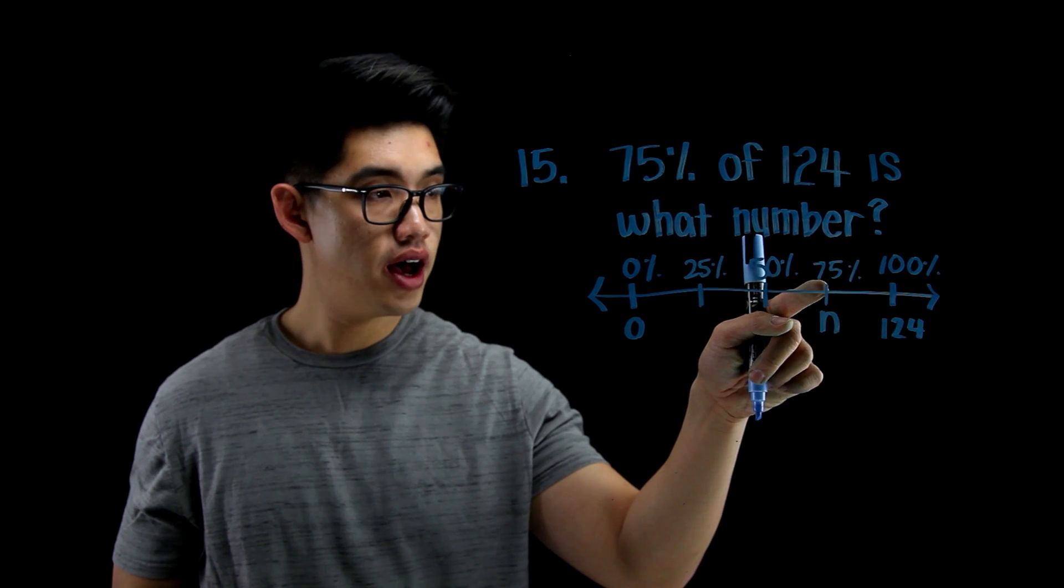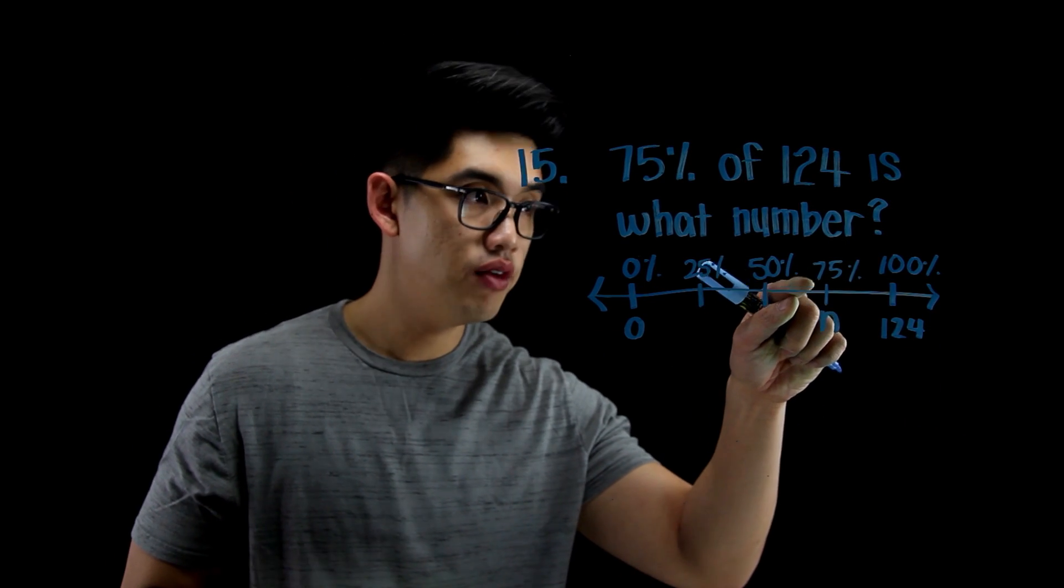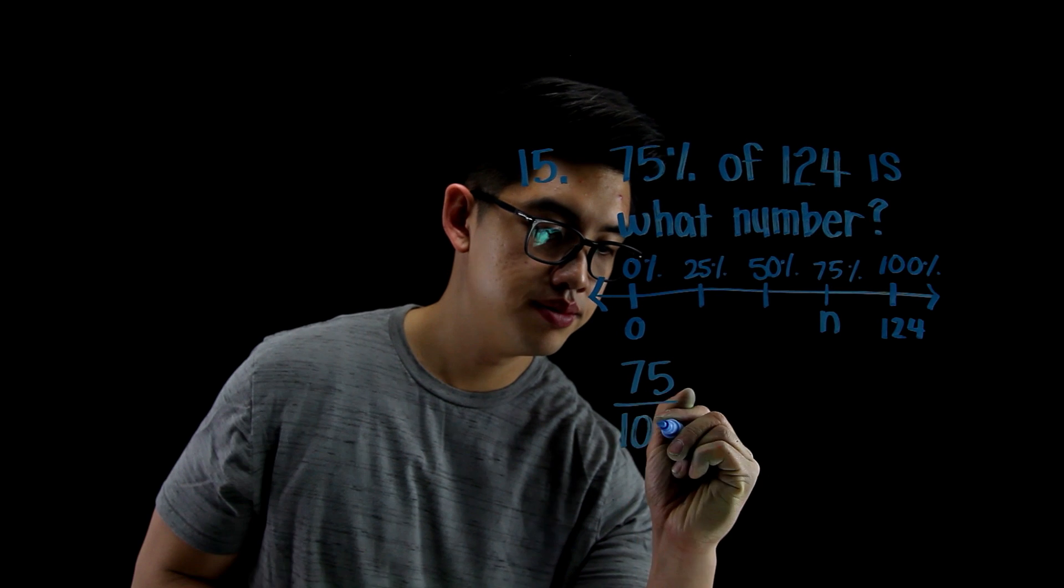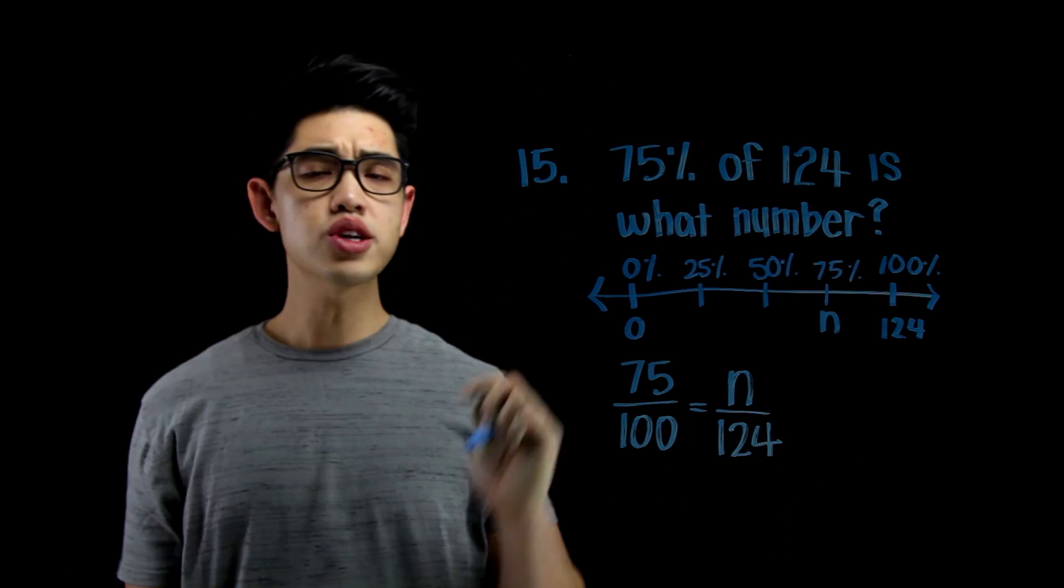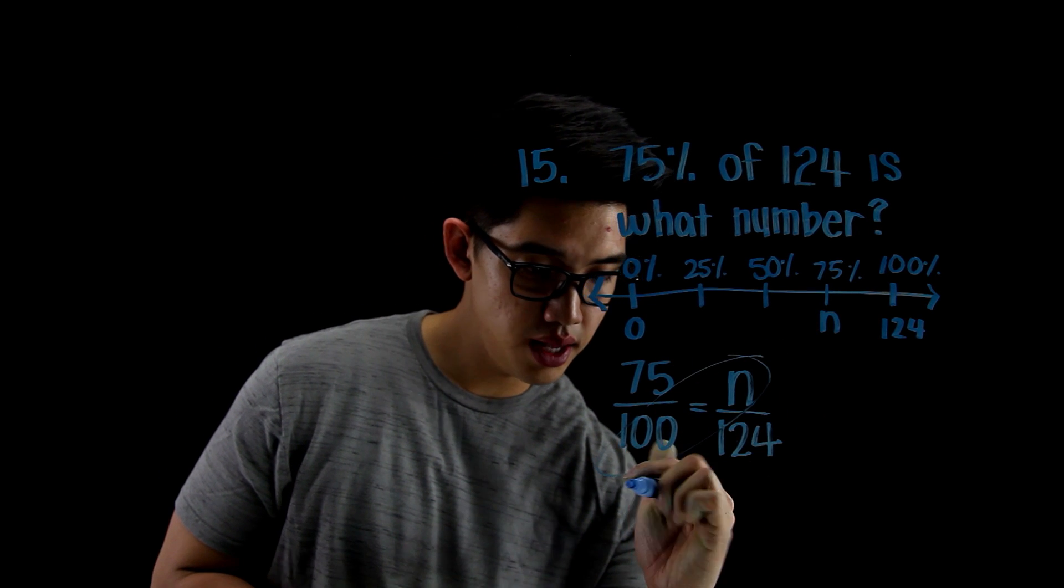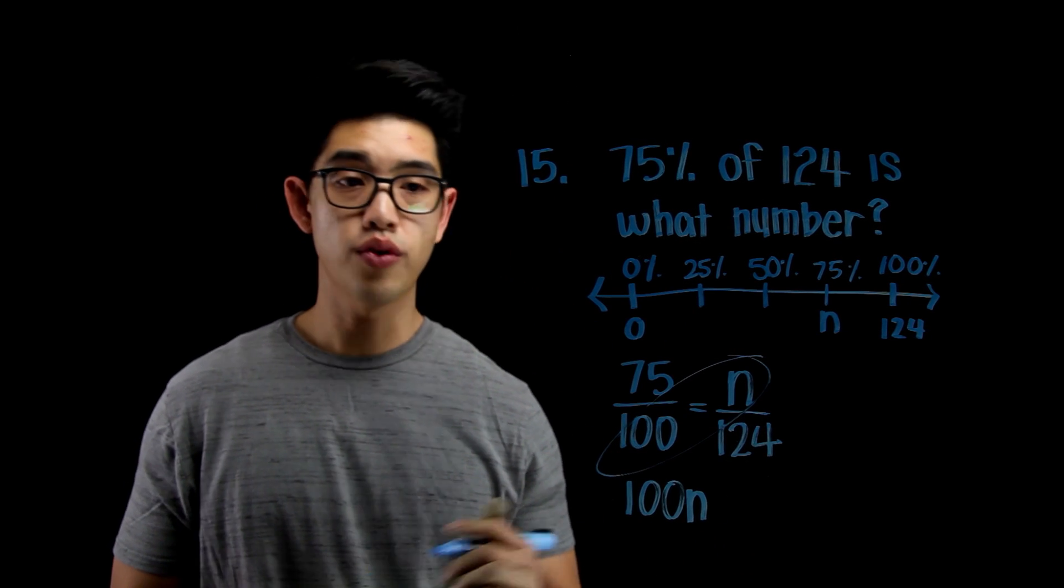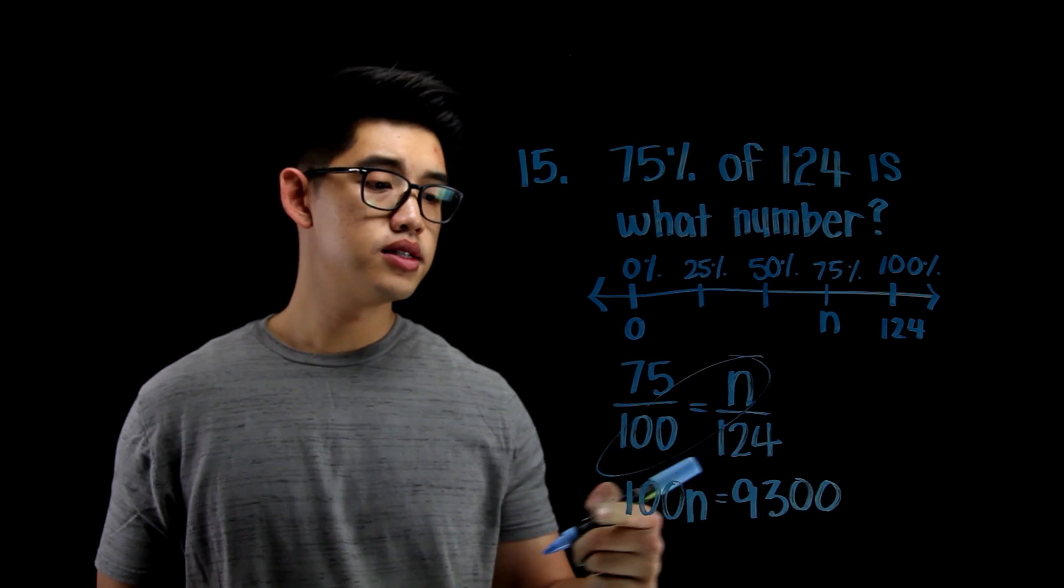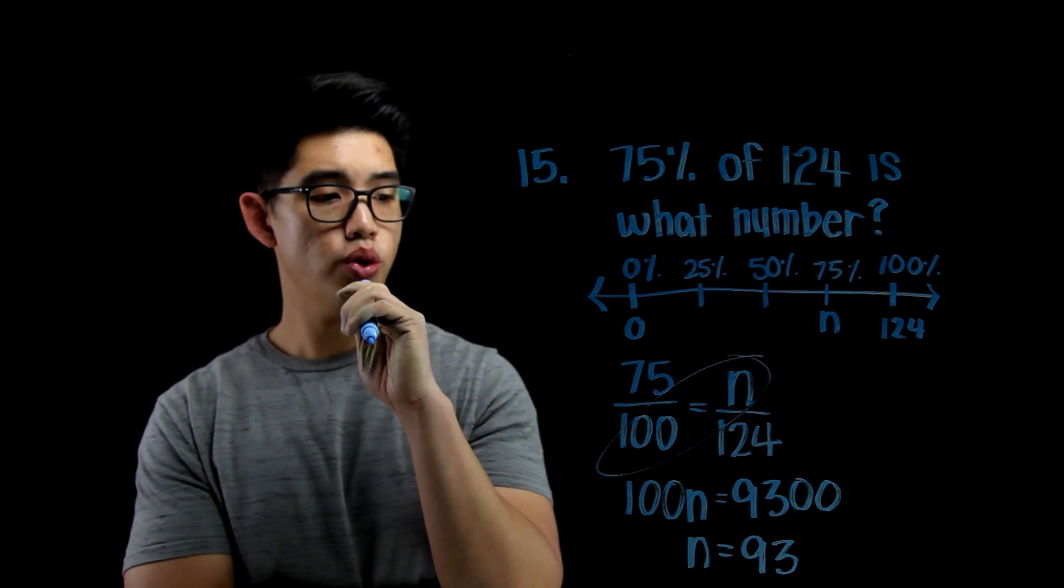I can write a proportion. I can say 75% out of 100% is equal to n over 124. Again, I'm using that same pattern. 75 over 100 is equal to n over 124. I can solve for n by cross multiplying using cross products. Let me see. 100 times n, that's going to be 100n. 75 times 124, that's going to be 9,300. And then I can divide both sides by 100 and get n equals to 93. So 75% of 124 is 93.